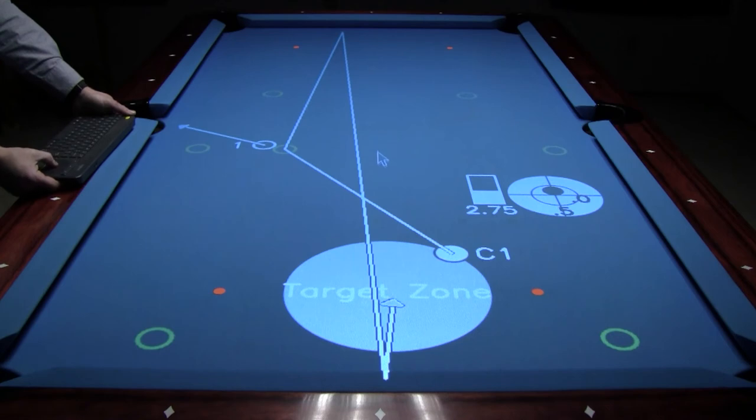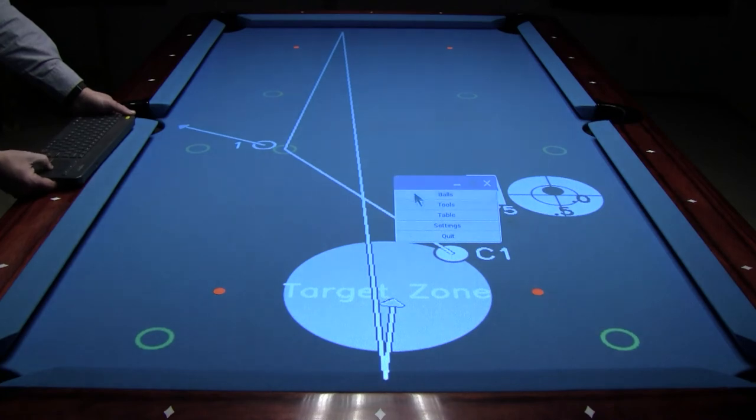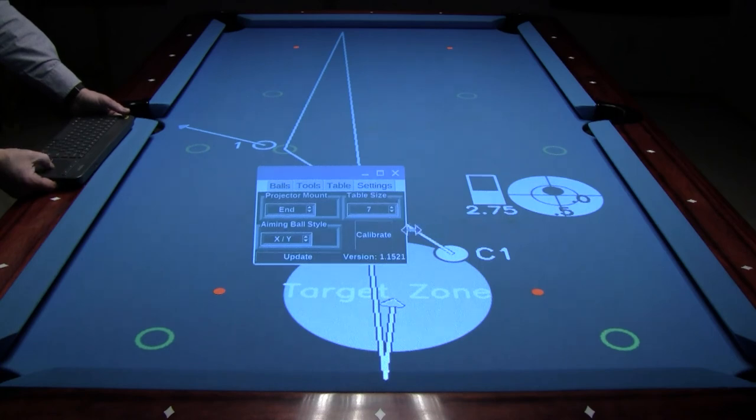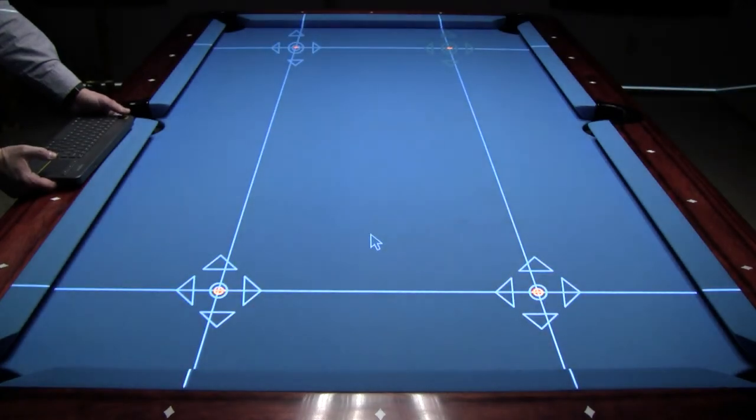The calibration tool can be accessed anytime by right-clicking on the table service, which will bring up the main menu. Next, left-click the settings option, which will bring up the settings screen. Then left-click the calibrate button and the calibration handles will appear, allowing recalibration of the system. Once the calibration is done, press the S key to return to your training.